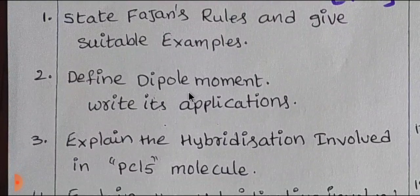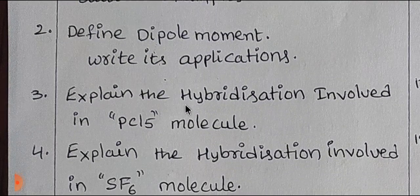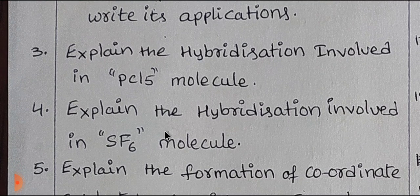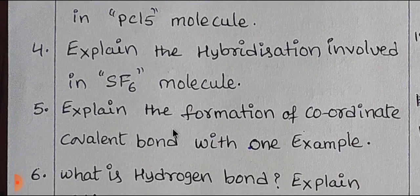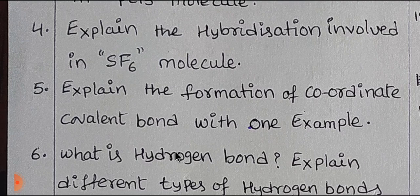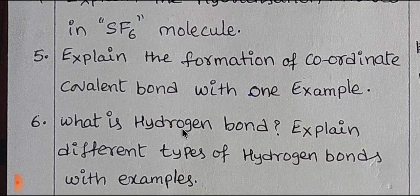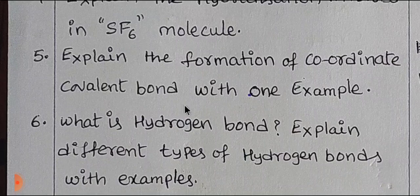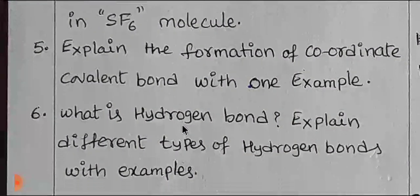The first topic is Fajan's rule and dipole moment. Next is PCl5 and SF6 molecules. Next is coordinate covalent bond. Next is hydrogen bonding. If you cover these topics, you can get more than 4 to 6 marks from chemical bonding.